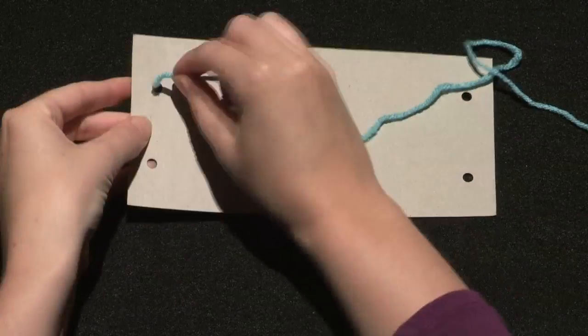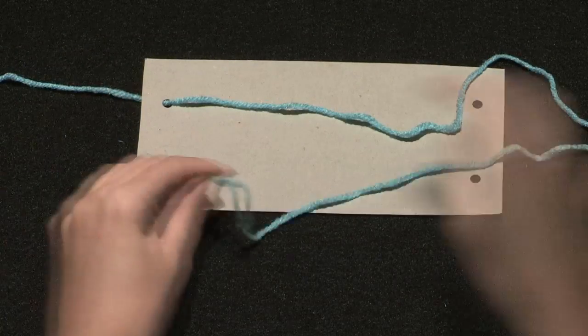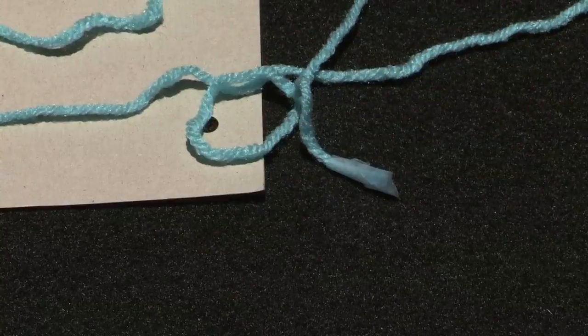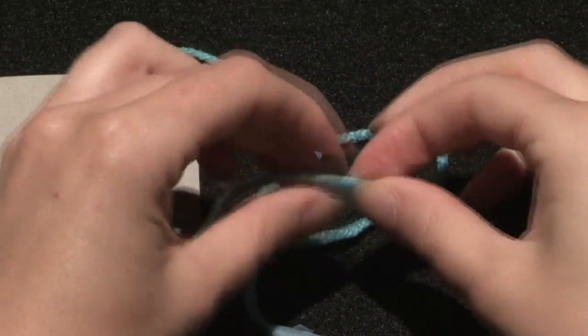Thread your yarn through the holes on one side of the cardboard. You may want to add some tape to the end of the yarn to help you string on the beads.